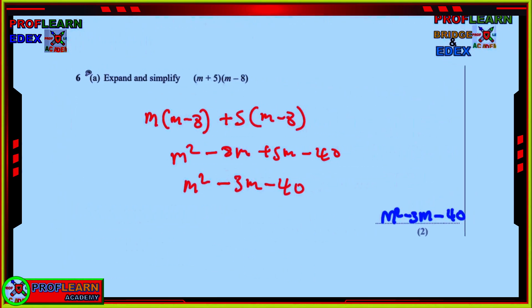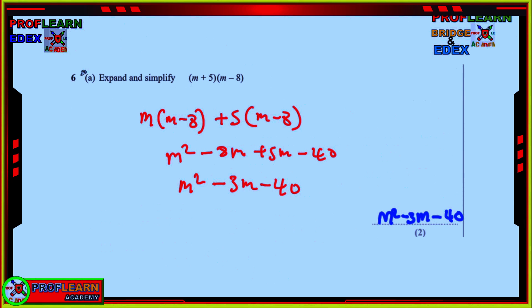Moving to the next question, Proflearn prepared for us, we are supposed to expand and simplify. So, if we are having this, remember, it's everything that we have, the two terms we have here, multiplied to everything that we have in the bracket. So meaning that we are going to have M times M minus 8, and 5 times M minus 8. If you multiply M times M, we'll give you M squared. M times negative 8, gives us negative 8M. 5 times M gives us 5M. And then this gives us negative 40. And we put the like terms together. We're going to get M squared minus 3M minus 40 as the final answer at that given point.